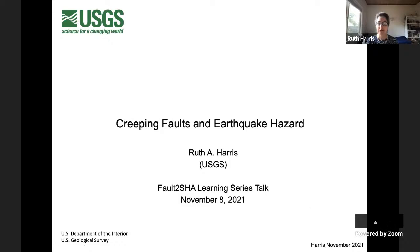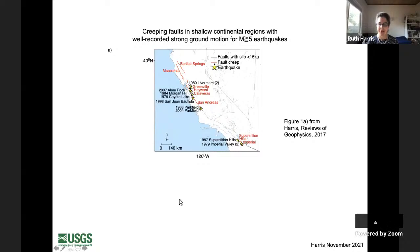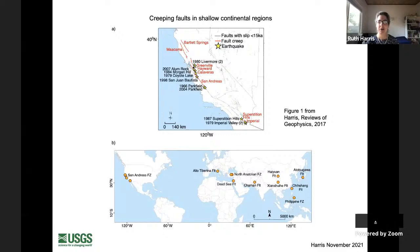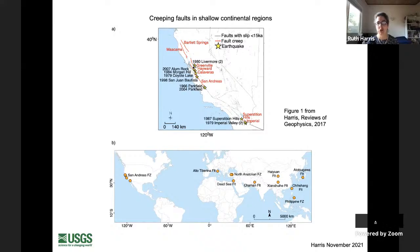Creeping faults are very common in California, especially in the northern part of the state, and this is where they were first recognized on the San Andreas Fault back in the 1960s — and even before then, on the Hayward Fault in California, back in the 1930s or so. We have many creeping faults in northern California and also in other parts of the world. They're still a rarity — almost all other faults are pretty much locked between large earthquakes.